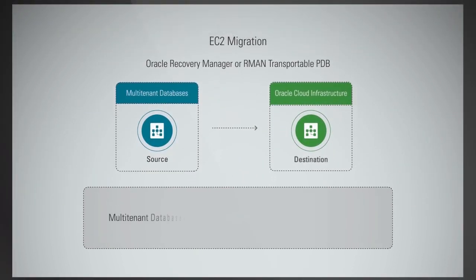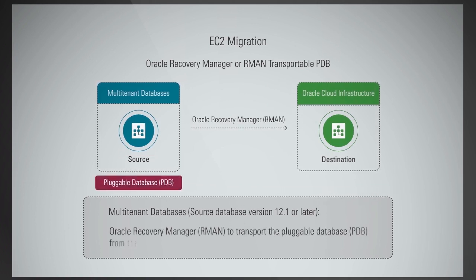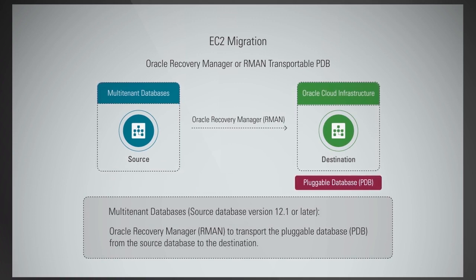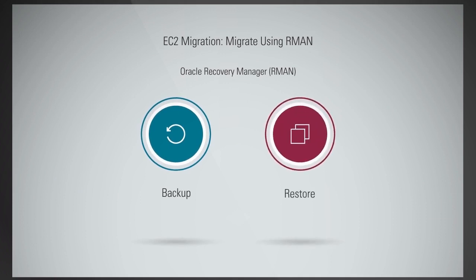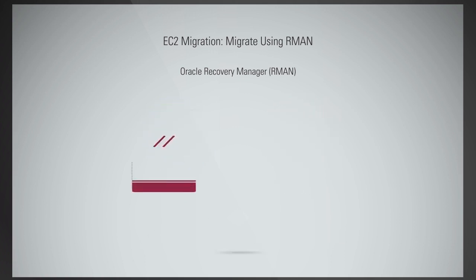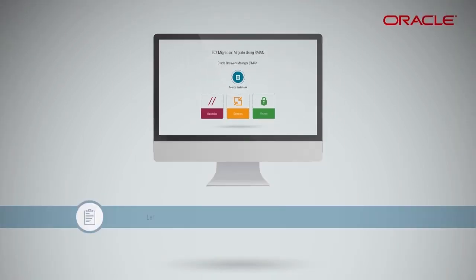If you use multi-tenant databases and your source database is version 12.1 or later, you can use Oracle Recovery Manager, RMAN, to transport the pluggable database, PDB, from the source database to the destination. Oracle Recovery Manager, RMAN, provides all the necessary programs and processes to back up and restore your database efficiently. Since your database will be running on Linux platforms on AWS, you can directly use RMAN to back up the source database and restore it to Oracle Cloud Infrastructure. RMAN has the necessary mechanisms to parallelize, compress, and encrypt backups on the source instance. Let us take a look at the details of the migration option using Recovery Manager.